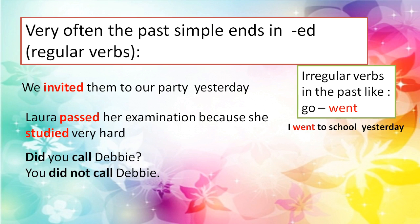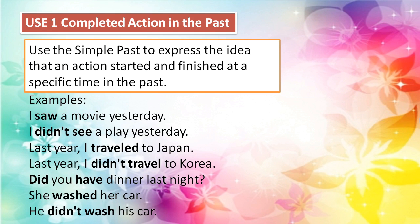'Did you call Debbie?' — 'Yes, I did.' / 'No, I didn't.' / 'You did not call Debbie. Did you?' Note that irregular verbs in the past, like 'go' → 'went': 'I went to school yesterday.' We use the simple past in completed actions — to express the idea that an action started and finished at a specific time in the past. Highlight the specific time.